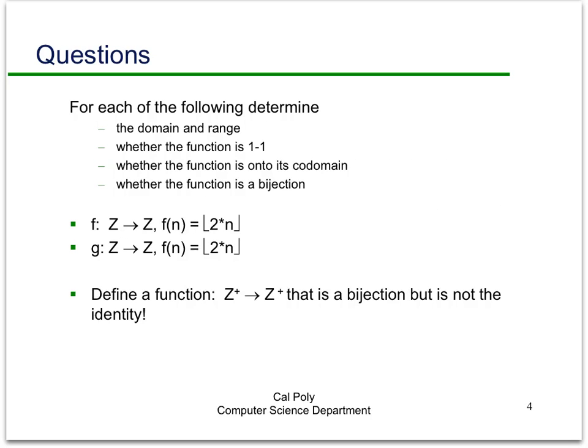So to make sure that you understood what we've done I want you to look at a couple of functions and determine which types they are and what their domain and range are. There's a typo here but the first function is correct and that is f of n is the floor of 2 times n, so think about how that behaves, what's its domain, what's its range, is it one-to-one, onto, and is it a bijection. And this second one where the typo is, it should read the floor of n divided by 2. So make sure you work through that and understand that one.